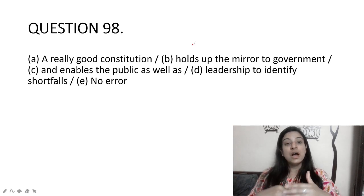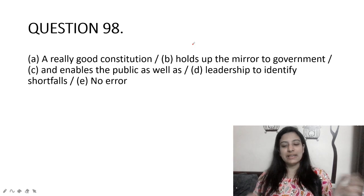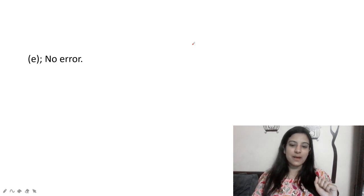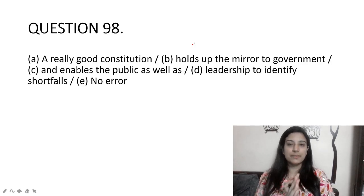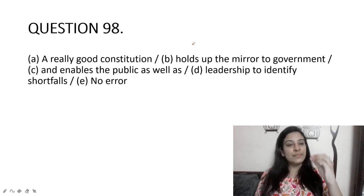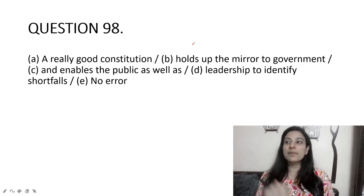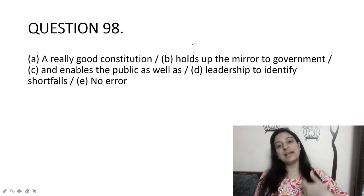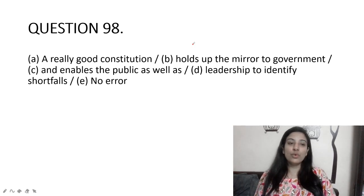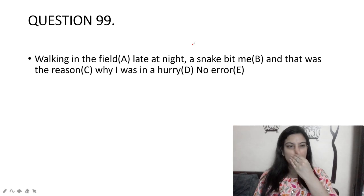A really good constitution holds up the mirror to government and enables the public as well as leadership to identify shortfalls. There is no error anywhere in this sentence. 'Holds up the mirror to government' means it shows the government its own reflection — it helps both the public and leadership identify where they are going wrong.